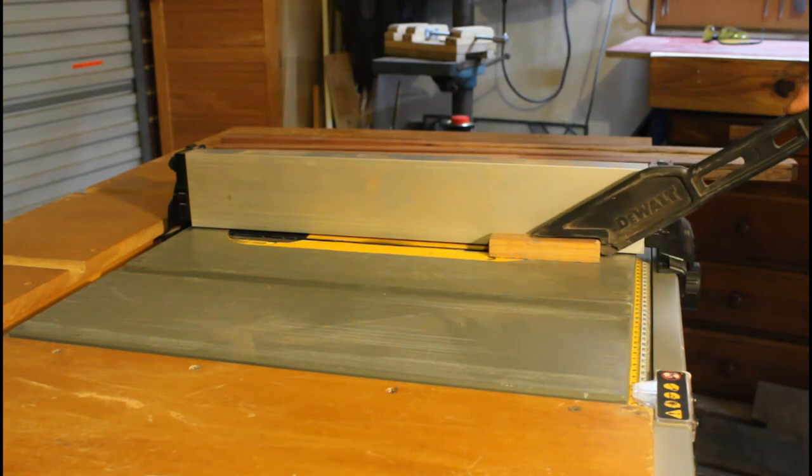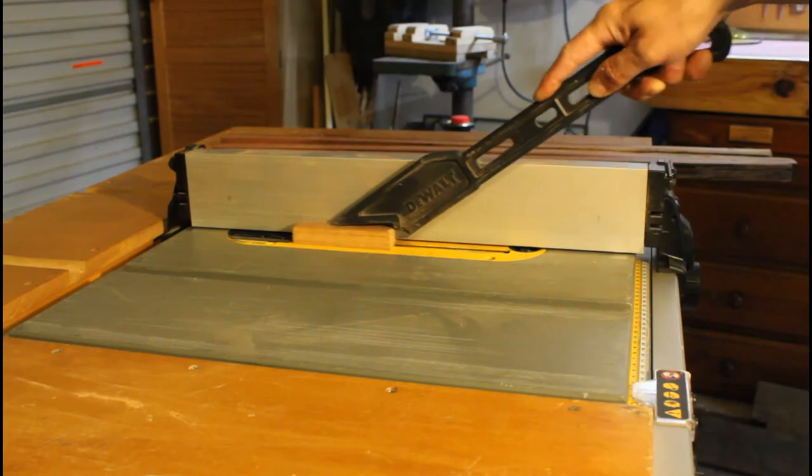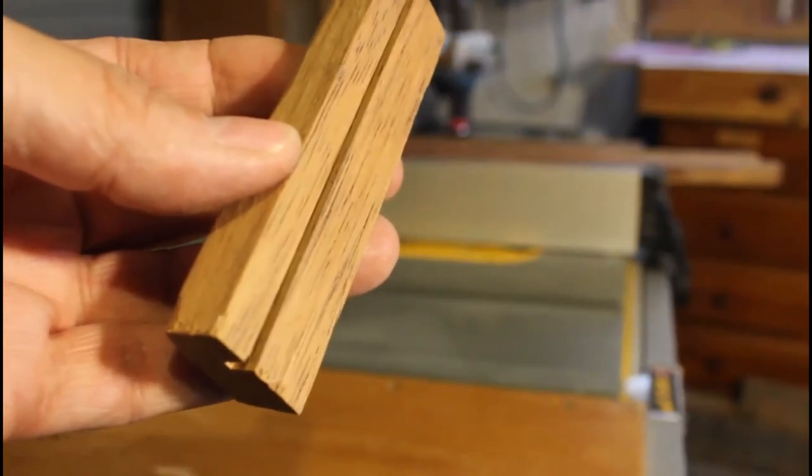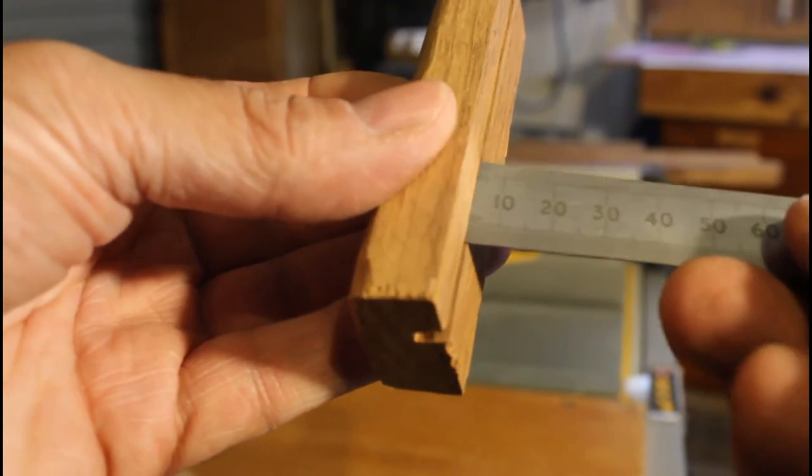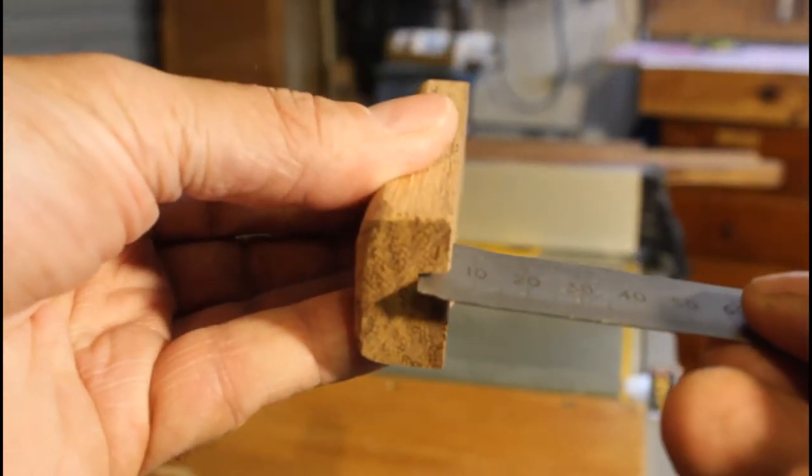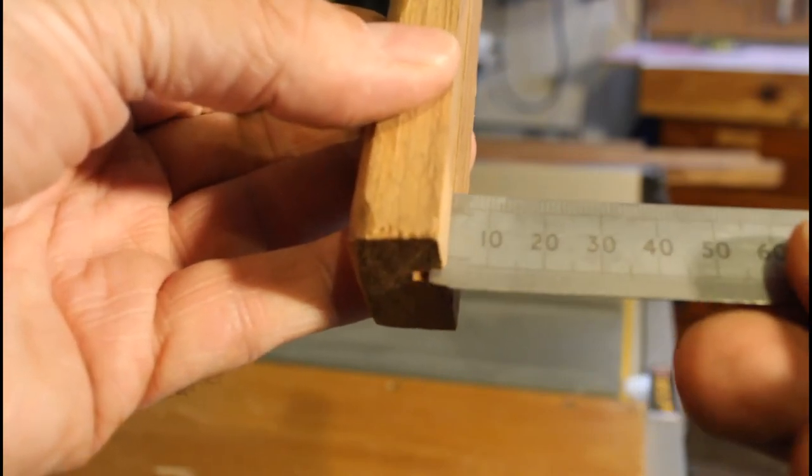The first thing I did was to rip a groove down each piece, which would be used to inlay a lighter colored piece of pine. I first did a test on a scrap piece of wood. As you can see here, the groove was around three millimeters, or the size of the kerf of the blade, and around six millimeters deep.